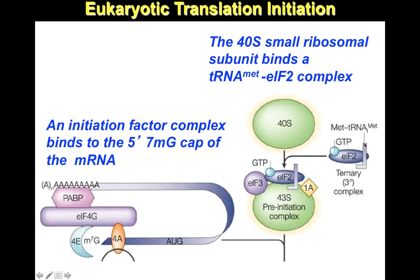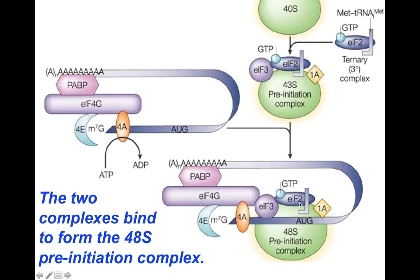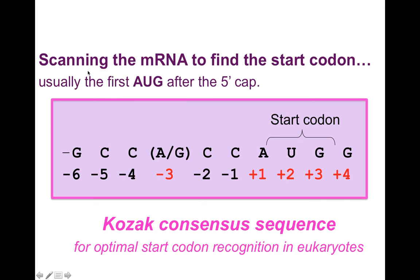The 40S small ribosomal subunit binds a complex of tRNA-Met — notice this is not formyl-methionine, just plain methionine — and EIF2 plus GTP, similar to the prokaryotic case. This binds to the small ribosomal subunit also with EIF3 and 1A. Then these two complexes come together to form the 48S pre-initiation complex — a pretty big complex with lots of accessory proteins, and remember this is only the small ribosomal subunit.